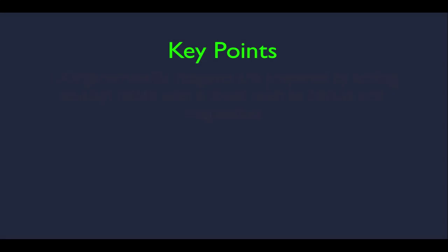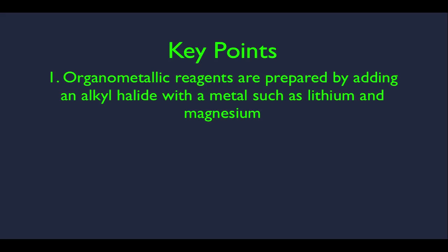Let's start here with our key points. What are our objectives for this lecture? We're going to discuss organometallic reagents — very much an introduction. We want to learn how they're formed and some basic key points about them. The first key point is that organometallic reagents are prepared by adding an alkyl halide with metals such as lithium and magnesium.